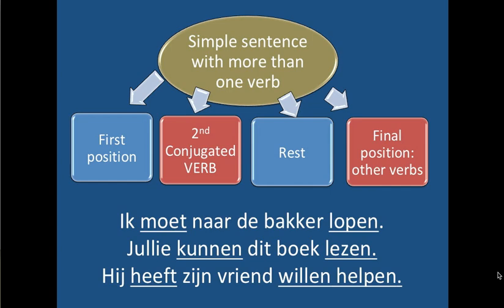'Ik moet naar de bakker lopen.' 'Jullie kunnen dit boek lezen.' 'Hij heeft zijn vriend willen helpen' — he had wanted to help his friend. And you see in that last sentence there are even two verbs at the end. That doesn't matter — there are examples of sentences with three or even more verbs at the end. As long as the conjugated one is in second place, the others can go at the end of the clause or sentence.